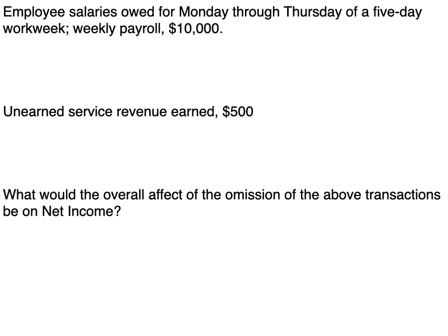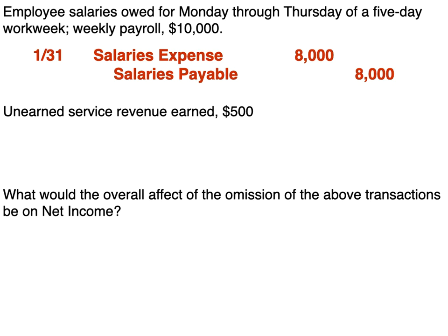Employee salaries owed from Monday through Thursday of a five-day work week — weekly payroll is $10,000. We're only incurring Monday through Thursday since Thursday ends on January 31st, the end of the period. So we have to record an adjusting entry for four days of salaries. $10,000 divided by 5 is $2,000 per day, times four is $8,000. So we debit salaries expense for $8,000 and credit salaries payable for $8,000.